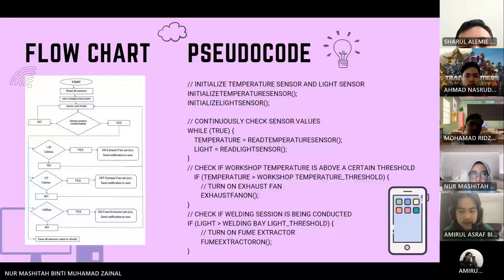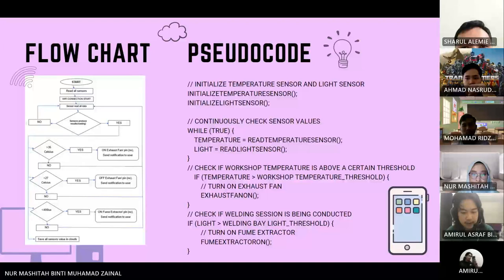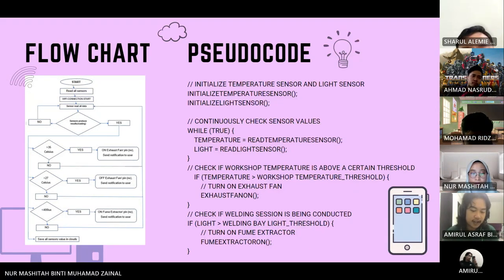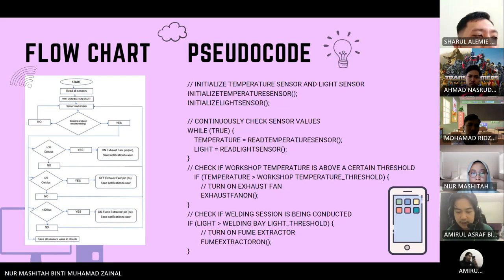This is the flowchart and pseudocode for the system. When all sensors are connected via Wi-Fi, the sensors will read all the data. If the workshop temperature is above 35 degrees Celsius, the exhaust fan will auto-on. If the temperature is below 27 degrees Celsius, the exhaust fan will be turned off. For the light sensor, if it detects light above 400 lux, the sensor will assess data and send it to the cloud, and the fume extractor will be turned on. All data will be saved in the cloud, and the user will be notified on their smartphone.